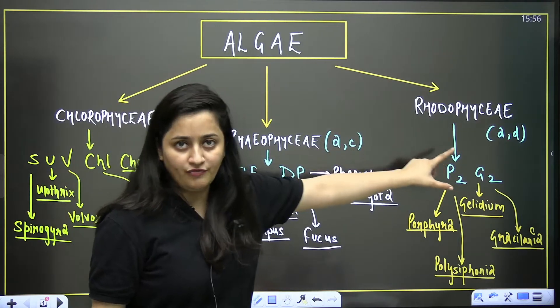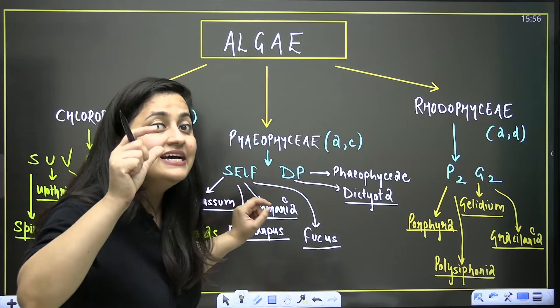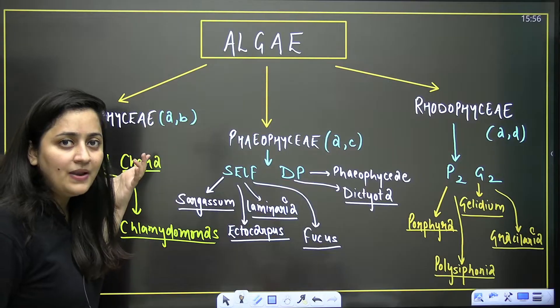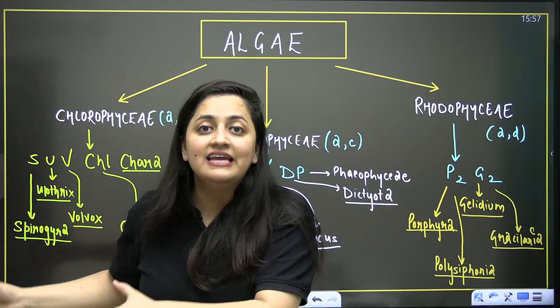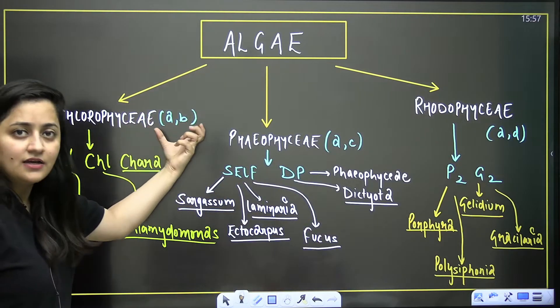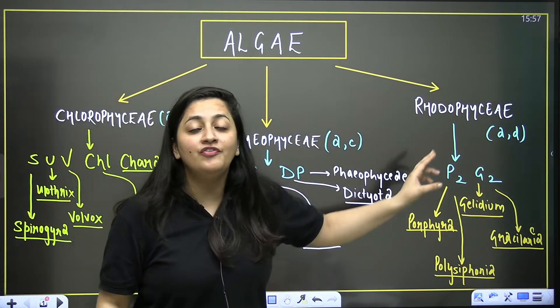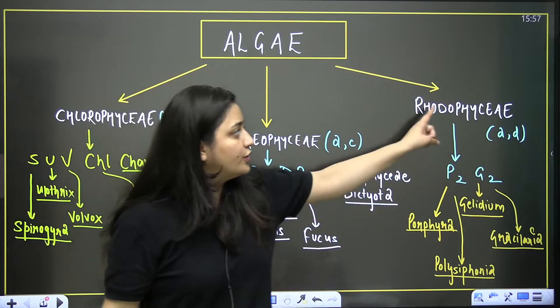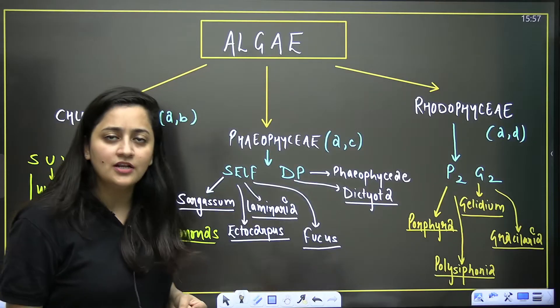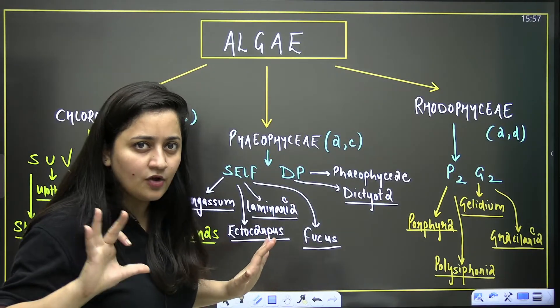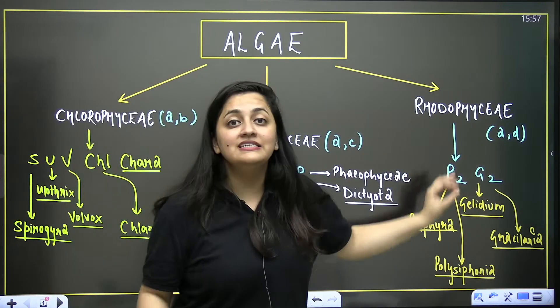Chlorophyceae has chlorophyll like higher plants. It is believed that higher plants arise from green algae. When you talk about Chlorophyceae, chlorophyll a and b is there like higher plants. Phaeophyceae, brown algae, has c. Rhodophyceae has d - chlorophyll d. So a is the universal chlorophyll present in all photosynthetic organisms.